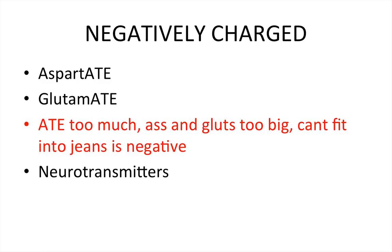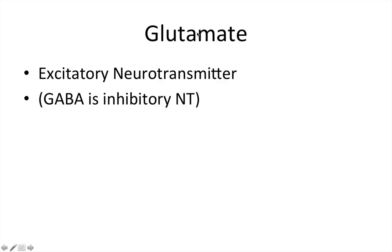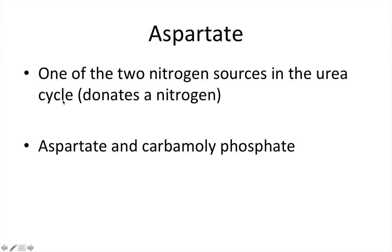The negatively charged R groups include aspartate and glutamate — remember, 'ate too much, ass and glutes too big, can't fit into genes, that's negative.' These two are known as neurotransmitters: glutamate is an excitatory neurotransmitter, while GABA is the inhibitory neurotransmitter — glutamate excites, GABA inhibits. Aspartate is one of the two nitrogen sources in the urea cycle, donating a nitrogen. The two sources of nitrogen for the urea cycle are aspartate and carbamoyl phosphate.